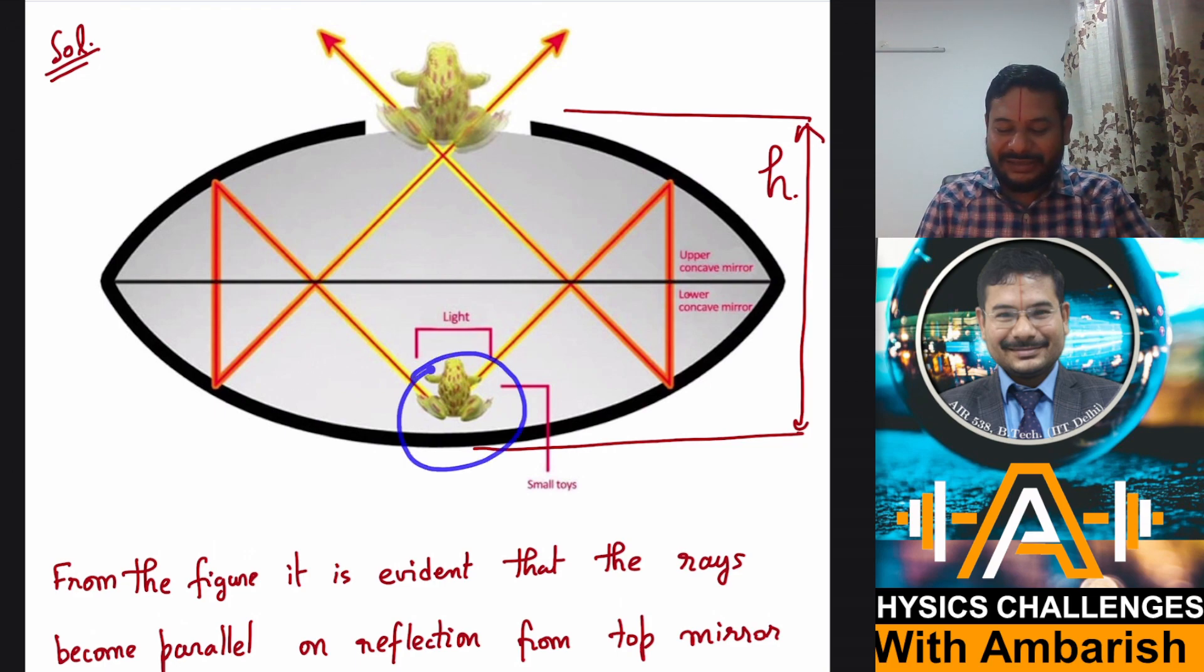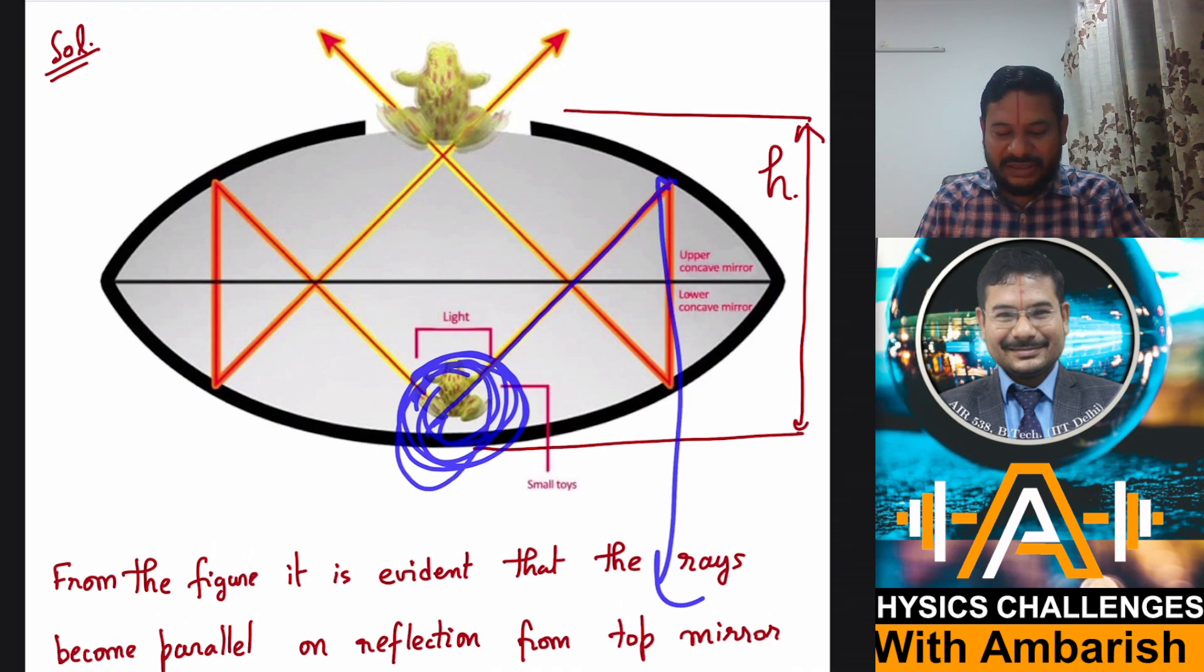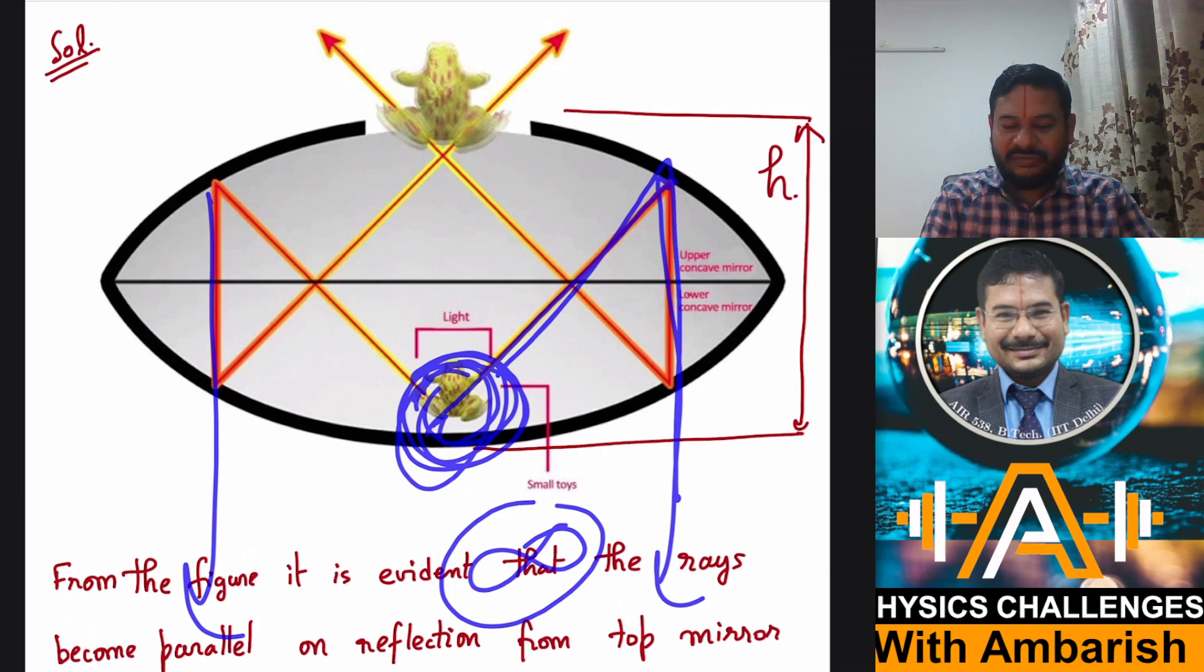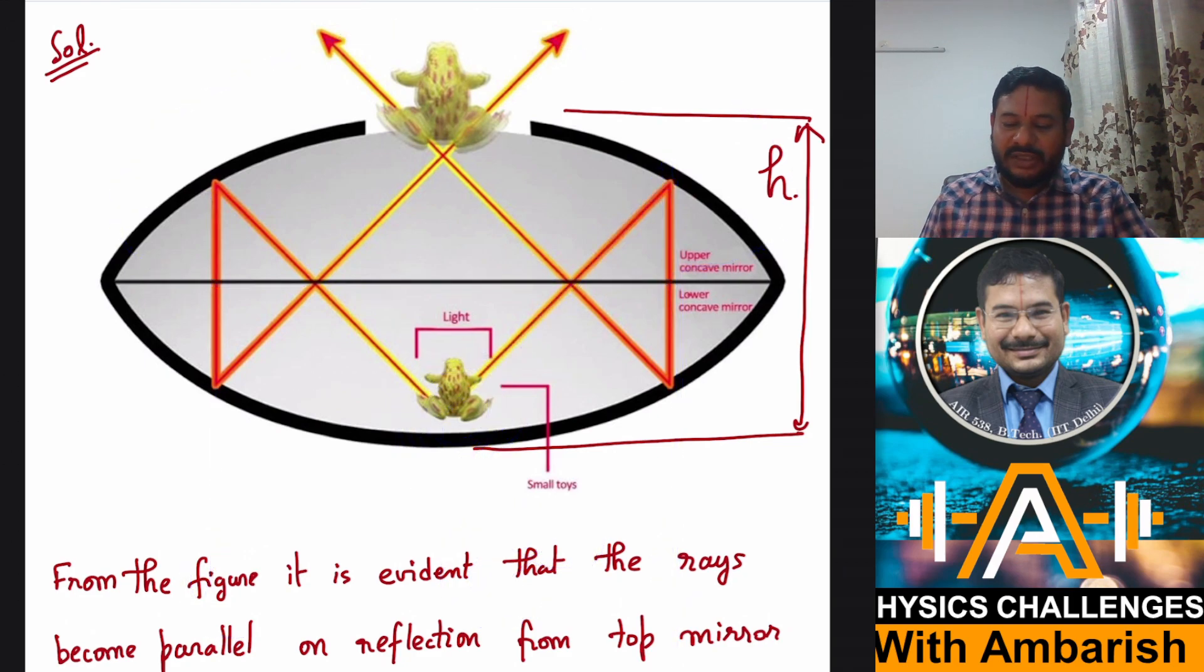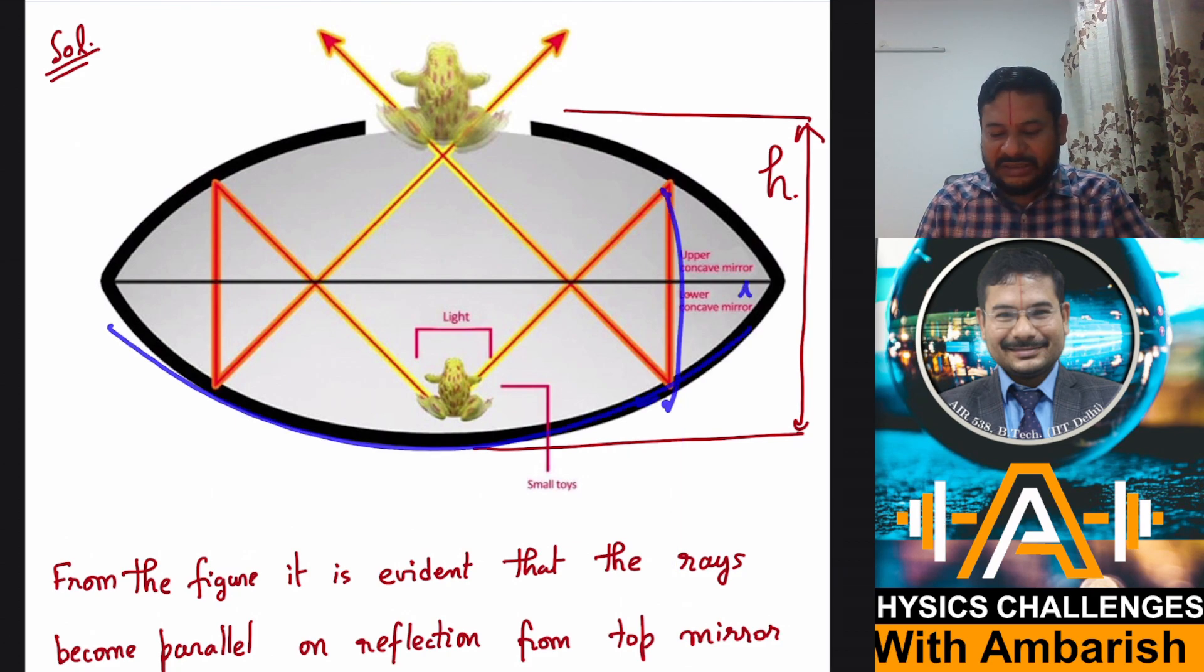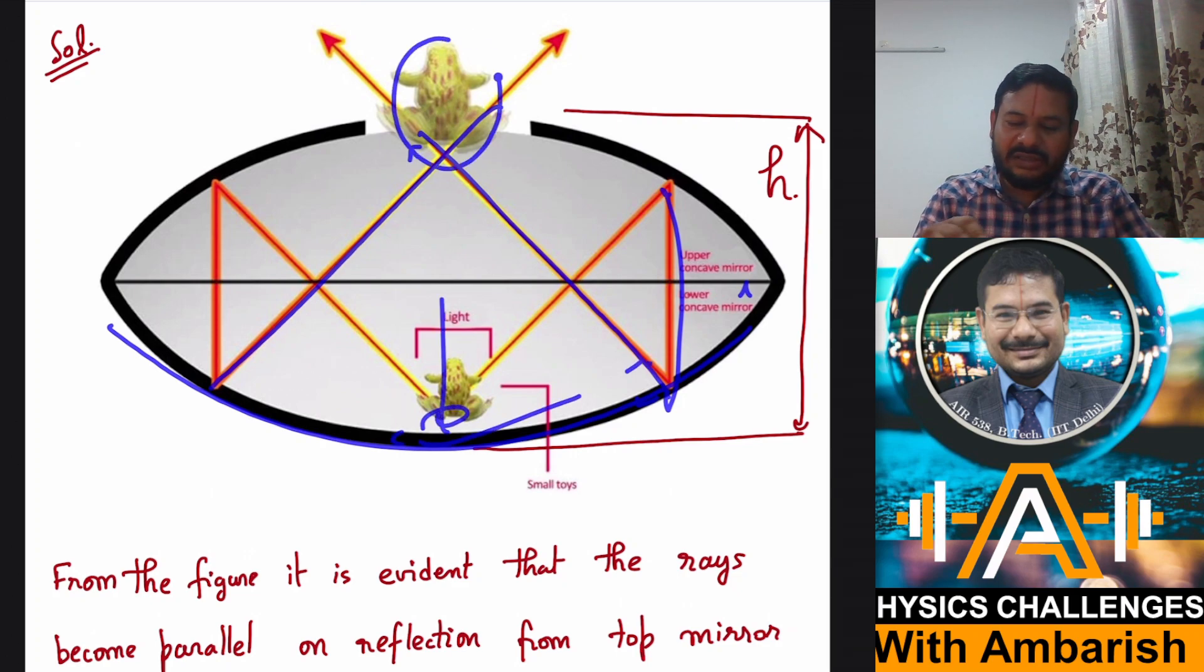So those things I'll explain. So what's happening here? This is the frog over here. And then the rays, since this is at the focus, so these, this image will be formed at infinity, right? Because of the first reflection from the upper mirror. And then that image will serve as the object for the lower mirror. And then this image will be formed on the focus of the lower mirror. So here, the final image will be formed. If we have a small toy over here, a small image will be formed over there.